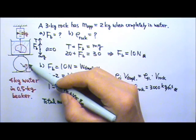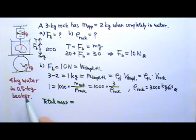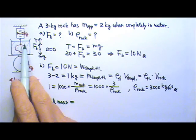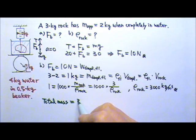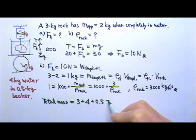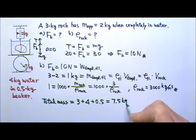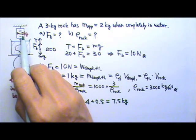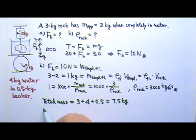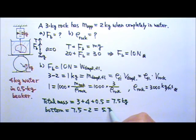The two scales together, the top scale and the bottom scale, have to support the total mass of the rock, water, and the beaker. The rock is 3 kg, the water is 4 kg, the beaker is 0.5 kg. So together they have to support 7.5 kg of mass. The top scale supports 2 kg, so the bottom scale must read 7.5 minus 2, 5.5 kg.